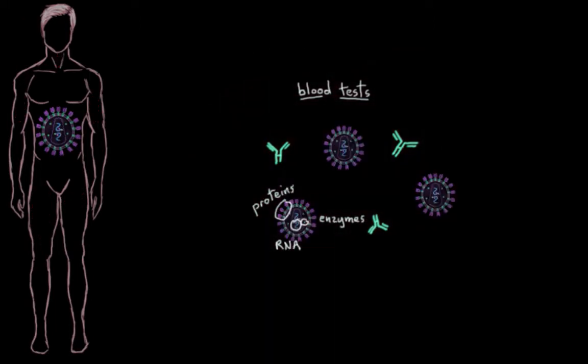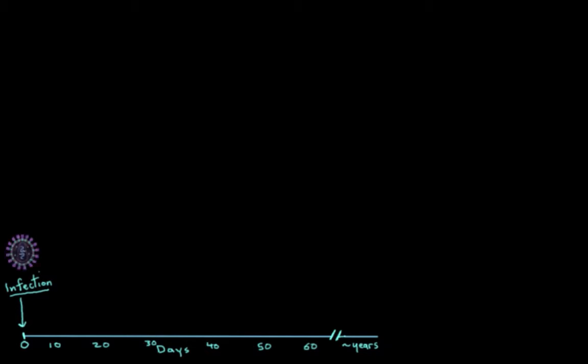After an HIV infection happens, let me draw a graph here to help explain. This might be useful. Here's our x-axis, and we'll put days down here, and we'll say day zero is when we got our infection, right? And we'll go to a few months here, and then a few years down here. After exposure to the virus, our immune system is going to kick in. It's going to kick in and start to make antibodies.